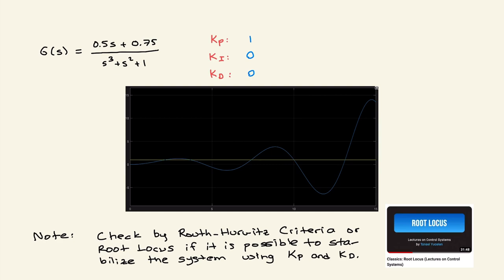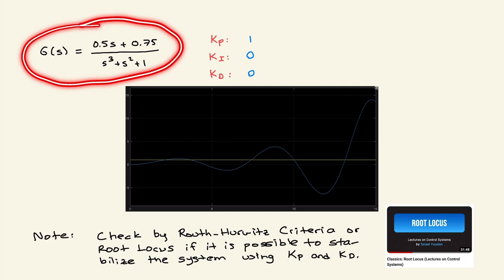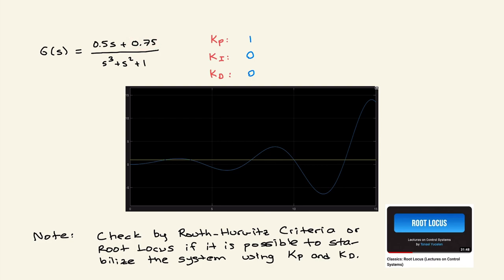The second system now, or the second example, I am looking at this system. We have 0.5s plus 0.75 on the numerator, one zero, and we have s to the power of three, s to the power of two, and one. S is missing, so this system cannot be open loop stable. Once you start with Kp one zero zero, you are going to see that you have an unstable system performance, it diverges.